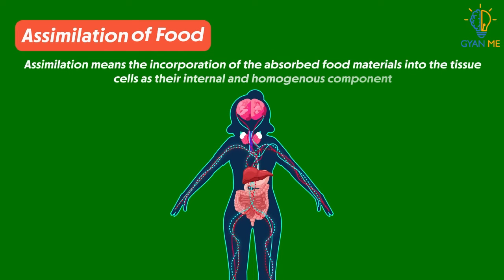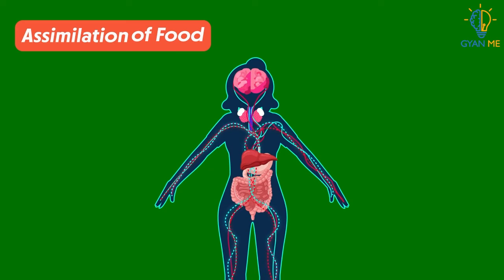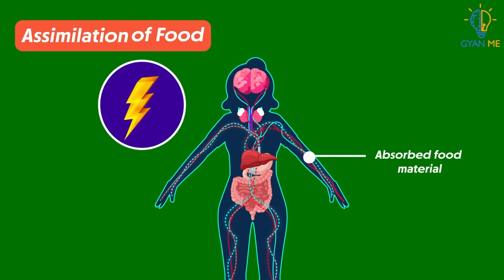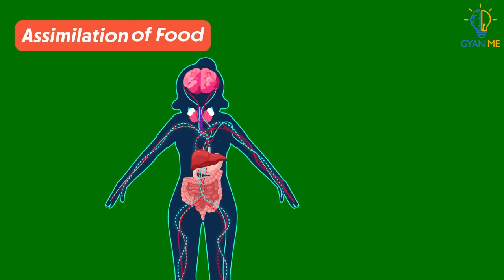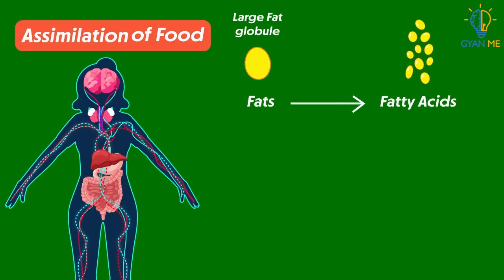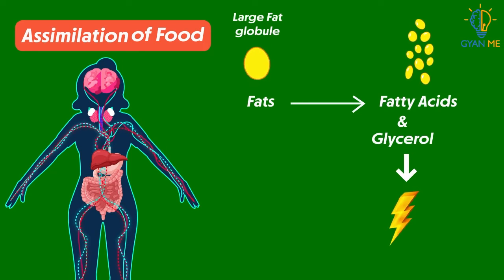The next process is assimilation of food. Assimilation means the incorporation of absorbed food materials into tissue cells as their internal and homogeneous components. In simple words, assimilation means using the absorbed food materials to produce energy or other components like DNA, RNA, and proteins required for our functioning. For example, the end products of fat digestion — fatty acids and glycerol — are absorbed and utilized by organs to produce energy. Excess fatty acids and glycerol are converted back into fats and stored in adipose tissue.